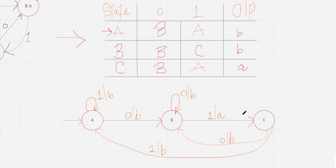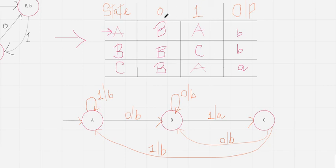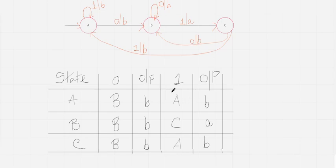From this Mealy machine diagram you can also draw the state transition table. The structure is the same as the Moore machine table, except the separate output column is eliminated and output is instead associated with each input transition. So for input 0 there will be a next-state and output column, and likewise for input 1. You can derive these values from the diagram. Let me show you the complete state transition table for the Mealy machine.